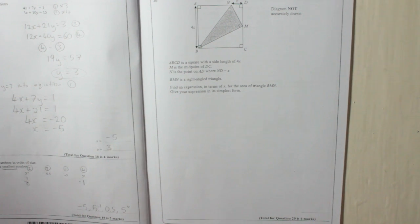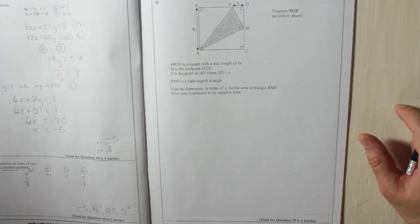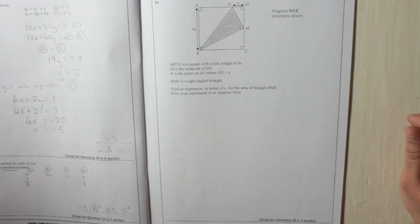So to do this question, basically all you need to be able to do is gather like terms or subtract terms, which is year 8 work, really, and find the area of triangles, which is also year 8, year 7 work. You probably did it in primary school as well. But just go through it step by step.